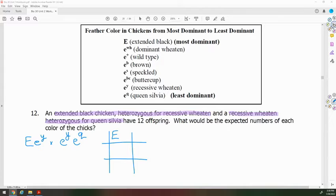So we have capital E from the first parent, and an EY. On the other side, we have EY and EQ. We'll bring them together through fertilization.